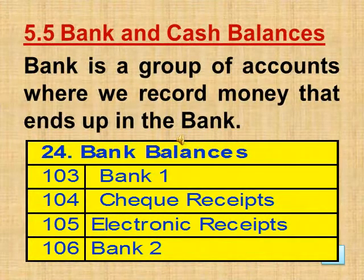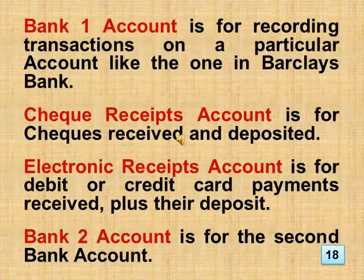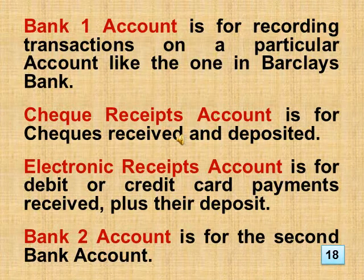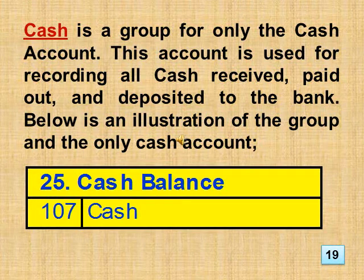Section 5.5 Bank and Cash Balances. Bank is a group of accounts where we record money that ends up in the bank. We have Bank Account 1, the Cheque Receipts Account, Electronic Receipts Account, and Bank Account 2 if the business has more than one bank account. Bank 1 account is for recording transactions on a particular account like one in Barclays Bank. Cheque Receipts Account is for cheques received and deposited. Electronic Receipts Account is for debit or credit card payments received plus their deposit. Bank 2 account is for the second bank account. Cash is a group for only the cash account, used for recording all cash received, paid out, and deposited to the bank.